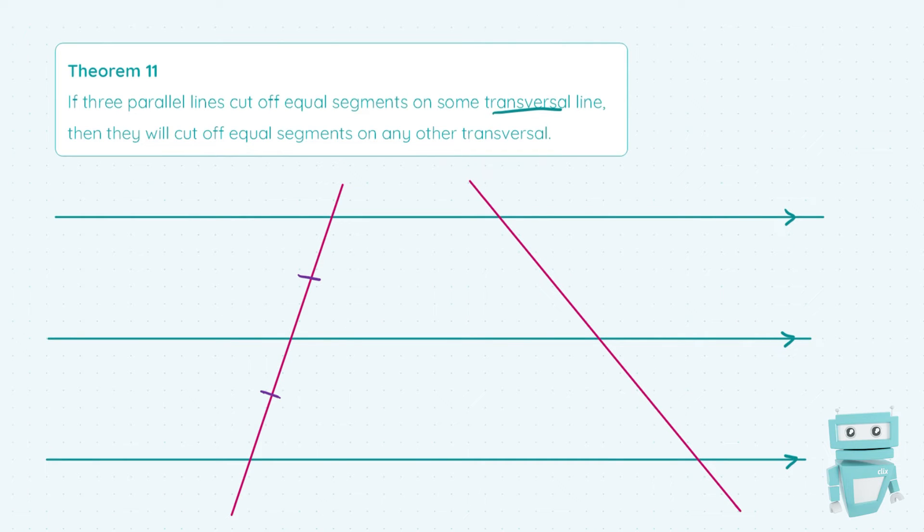So with that definition out of the way, what is meant by this theorem is that if we have a situation like this, where we have equal segments being cut off on one transversal, so this transversal over here on the left, this segment in here is equal to the distance of this segment in here between the points which the transversal cuts on the parallel lines.